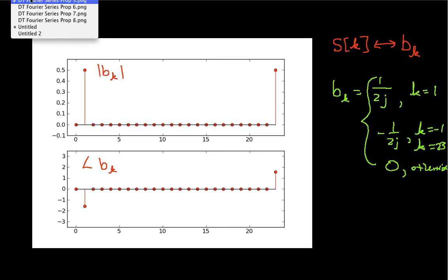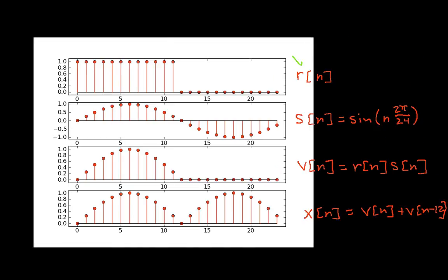Okay. The next one is going to be a little more complicated. So let's see. The next thing we need to do is find the Fourier series coefficients for this V of N where we've multiplied R and S to get V of N.